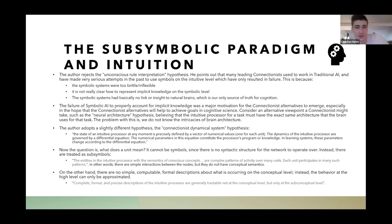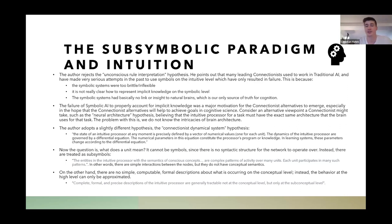The failure of symbolic AI to account for implicit knowledge was a major motivation for connectionist alternatives to emerge, hoping these alternatives would help achieve goals in cognitive science that couldn't be achieved before. In the modern day we can see this is the case — there are many things we can do with neural systems today that weren't possible in the past, basically involving the processing of raw sensory or numeric data.